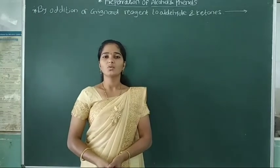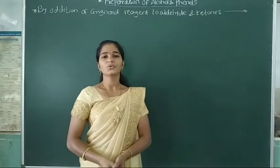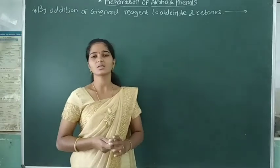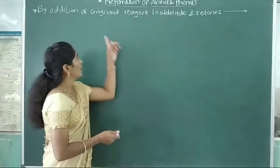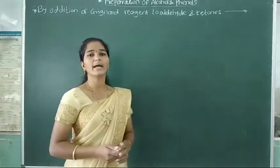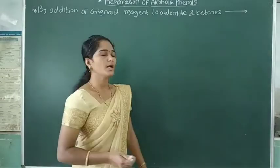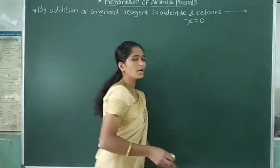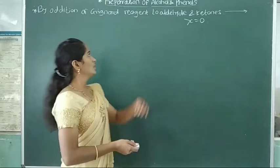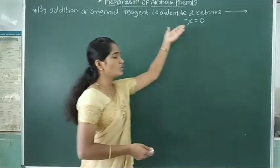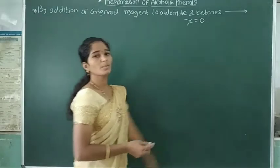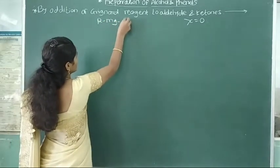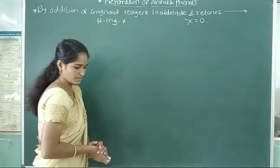Good morning students. Today we are going to study about another method for preparation of alcohols. This alcohol is prepared by addition of Grignard reagent to aldehyde and ketone. The formula of Grignard reagent is RMgX, represented as RMgX.